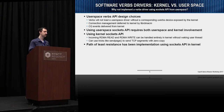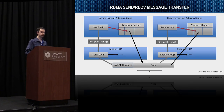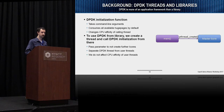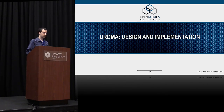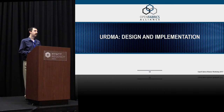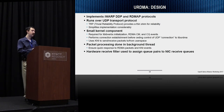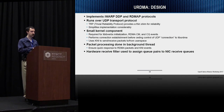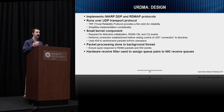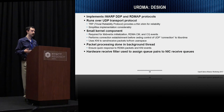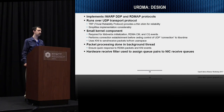Audience question: Regarding the guarantee of packet ordering and sequence, as well as how you manage the congestion control window. Speaker: URDMA is running over UDP with a small reliability shim. The reliability shim defines a window size and ensures that packet ordering is maintained.